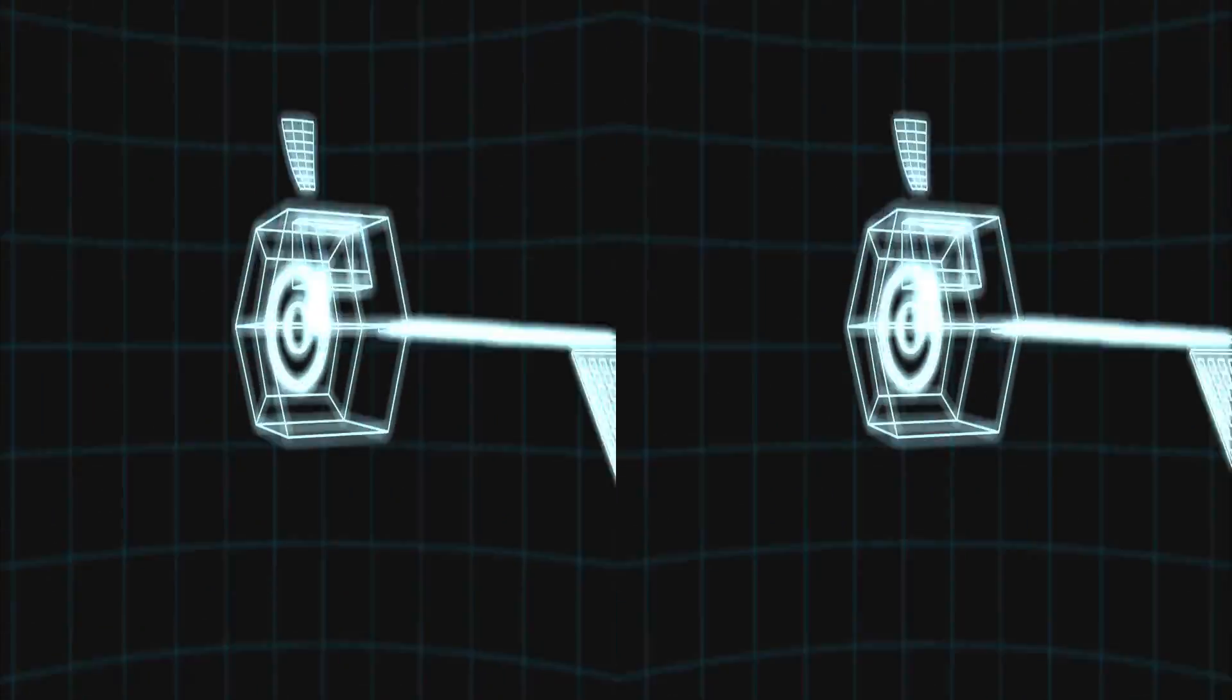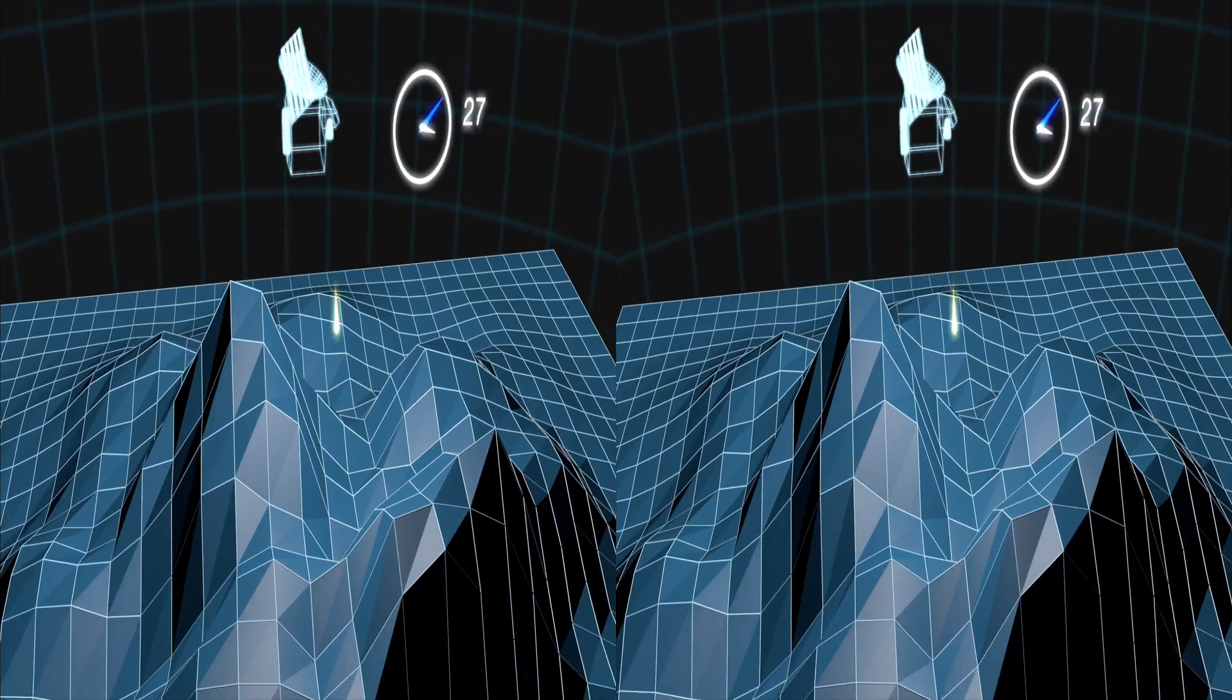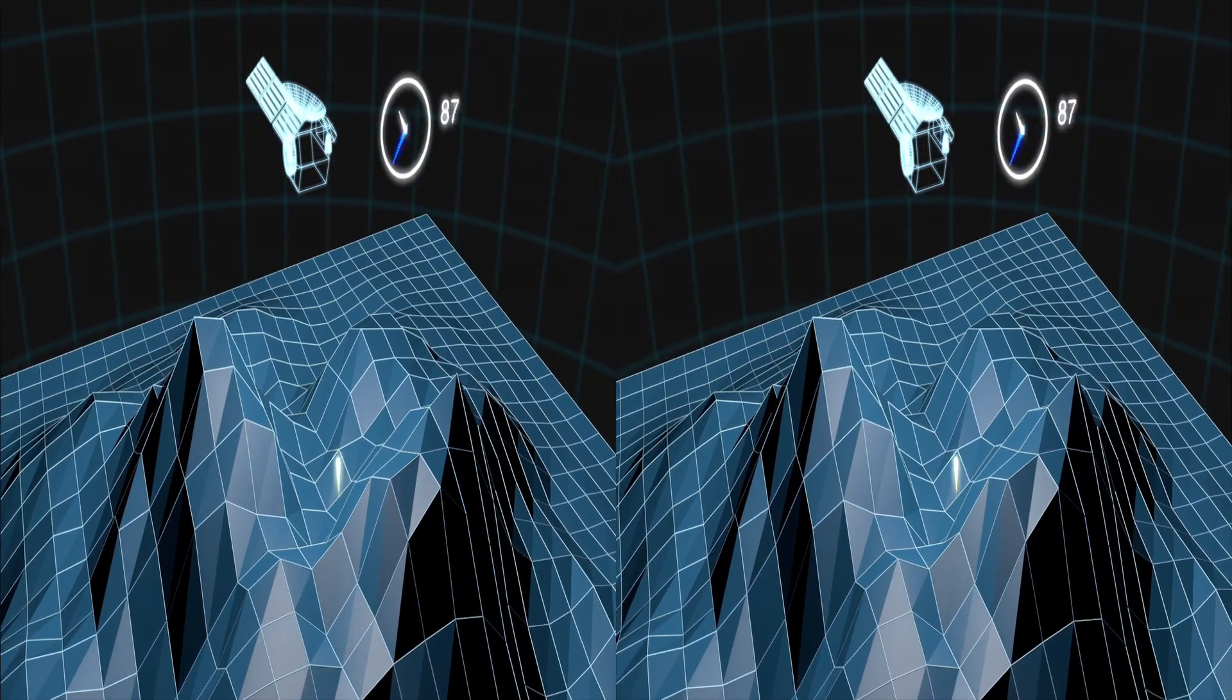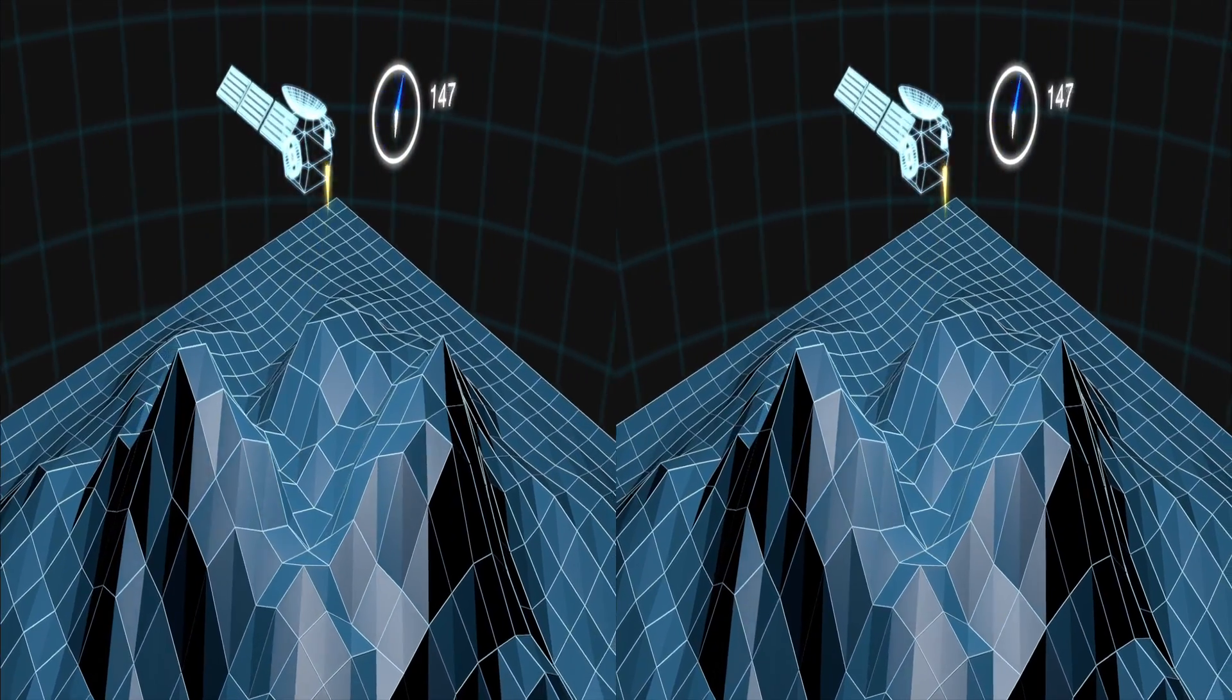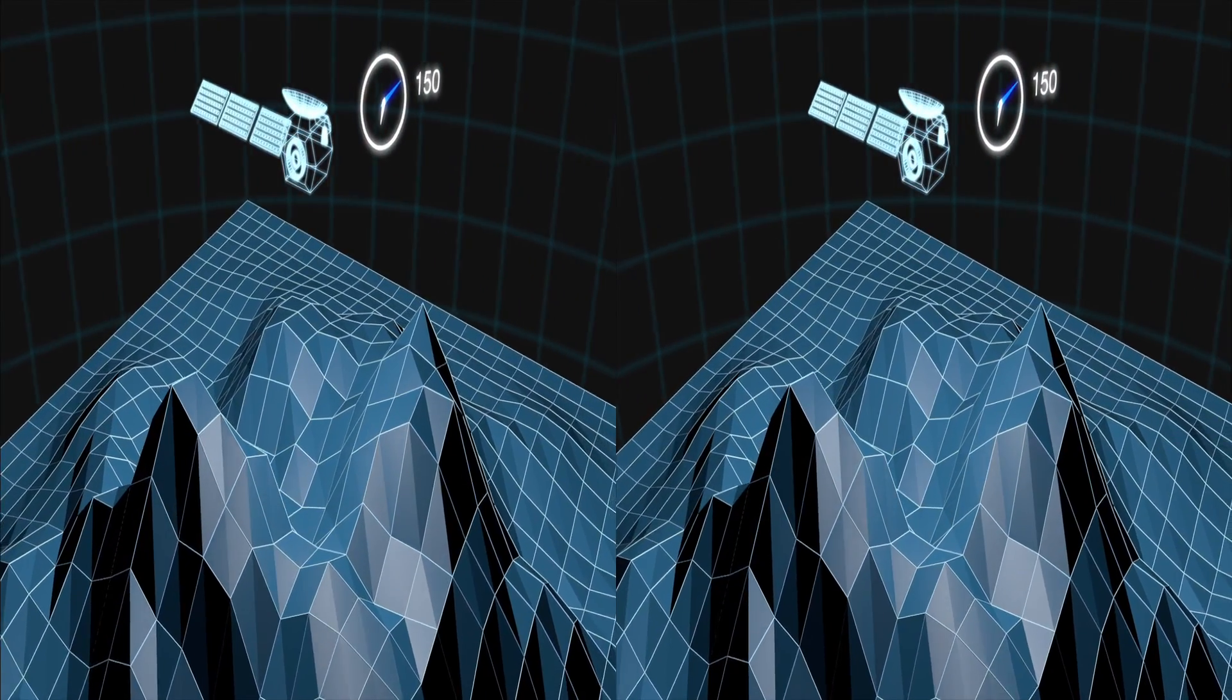To make these measurements, the LIDAR instrument first sends a laser pulse down to the planet's surface. The pulse hits the ground and reflects back to the instrument, where an onboard counter measures the time it took the pulse to make its trip.